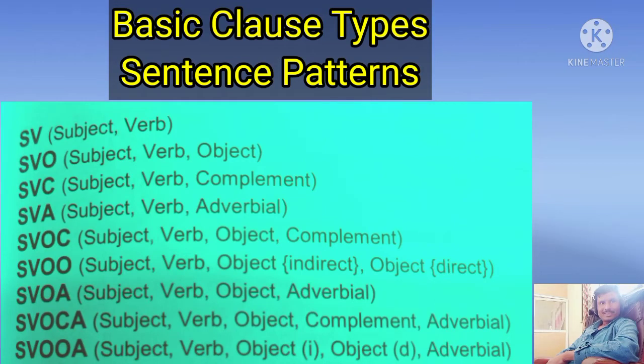Hello friends. Welcome back to Learn with Lakshman. In the last video we have seen the clause elements, that is the parts of a sentence. The parts of the sentence are S-V-O-C-A. In this video we will see the basic clause types, which are the types of sentences. We are going to see how many possible combinations there are in English of S-V-O-C-A, and these are called basic clause types or the types of sentences.